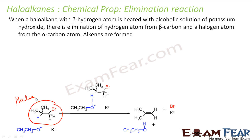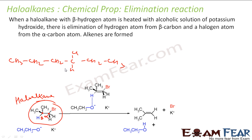In haloalkanes, we have the beta carbon. The carbon that has the halogen attached is called the alpha carbon, and any carbon adjacent to the alpha carbon that has a hydrogen is called the beta carbon. So the alpha carbon is the one with the halogen attached, and the carbon adjacent to it is the beta carbon.